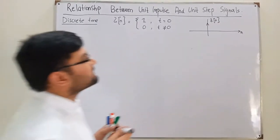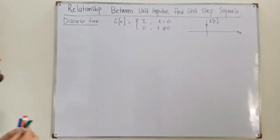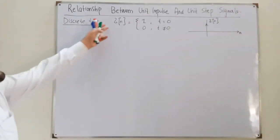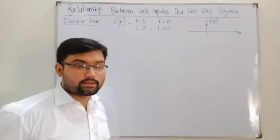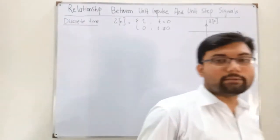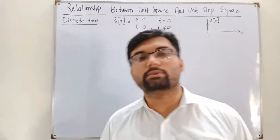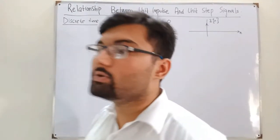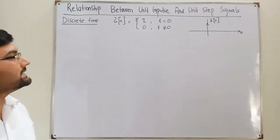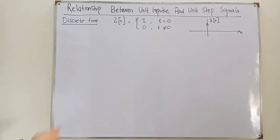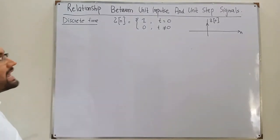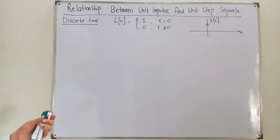Another source of confusion in these topics is the symbols. This symbol — generally we call it sigma — in this course it is known as delta. This is also known as delta; you can check it on Google. The other one is that triangular symbol.